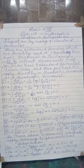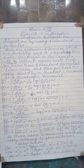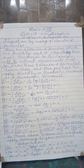Seventh formula: integration of under root (x square minus a square) into dx is equal to x upon 2 times under root (x square minus a square), minus a square by 2 times log of (x plus under root of x square minus a square), plus c.